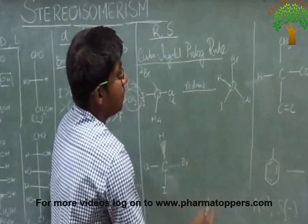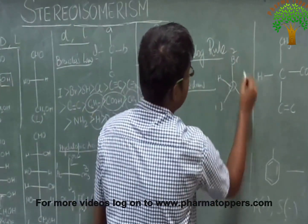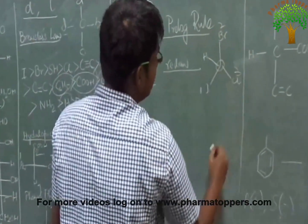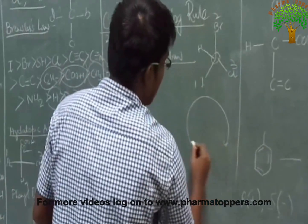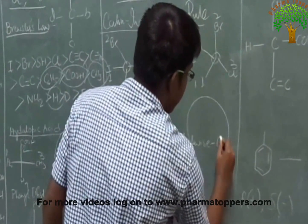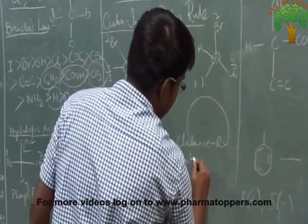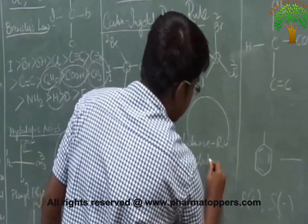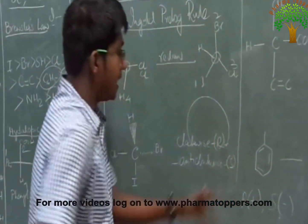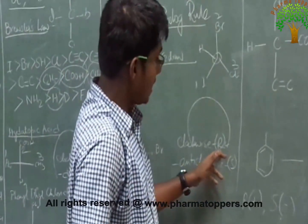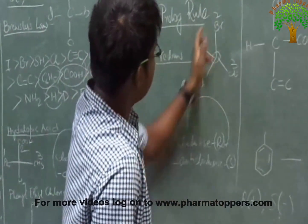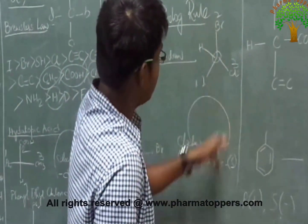The third rule says: number the remaining groups 1, 2, and 3 and observe the direction of rotation. Tracing 1 to 2 to 3 gives a clockwise rotation, which gives us R. If it were anticlockwise, that would give us S. R stands for rectus (right/clockwise) and S stands for sinister (left/anticlockwise).